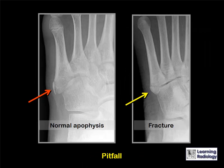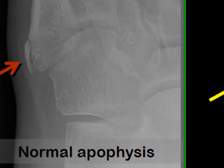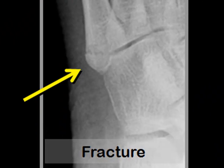It's important not to mistake a normal apophysis found in the feet of growing children with a fracture. The normal apophysis at the base of the fifth metatarsal is oriented longitudinally, whereas fractures at the base of the fifth metatarsal are almost always oriented transversely.